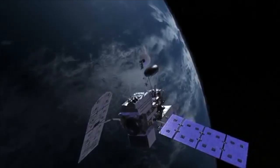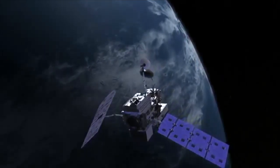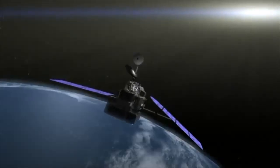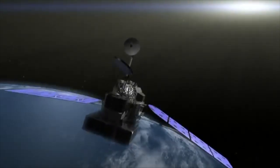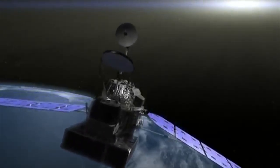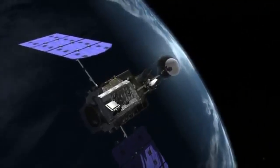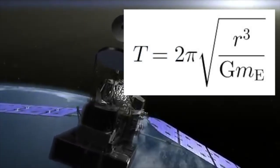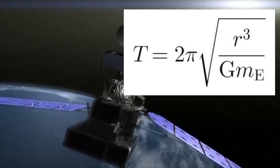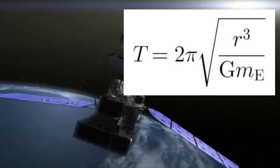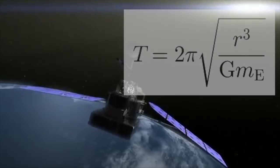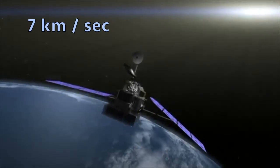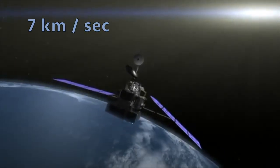A great example of circular motion is right above us in the form of orbiting satellites. The period, or time it takes a satellite to make one orbit, is equal to two pi times the square root of the radius cubed over the gravitational constant times the mass of Earth. This means that low Earth orbit satellites can travel as fast as seven kilometers per second in relation to us.